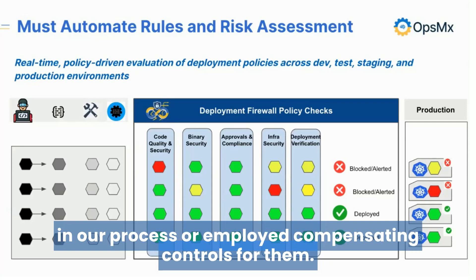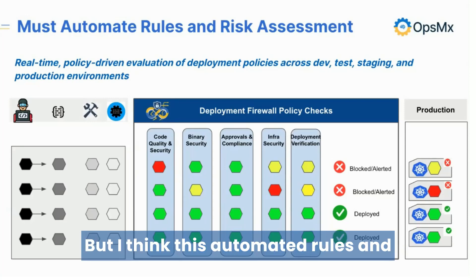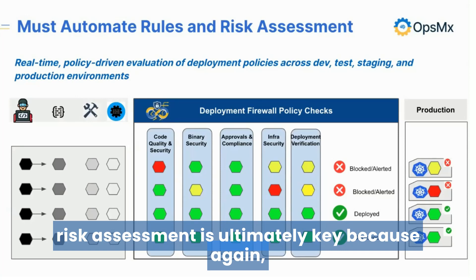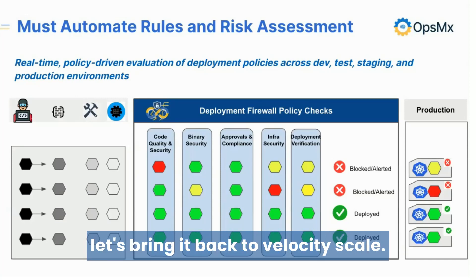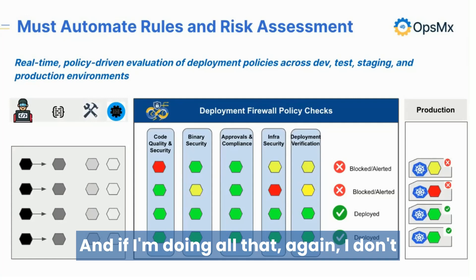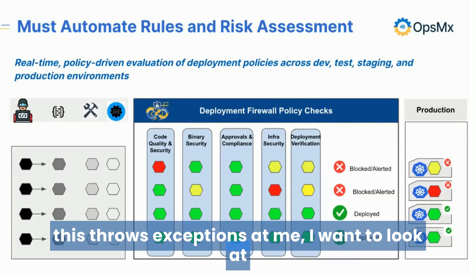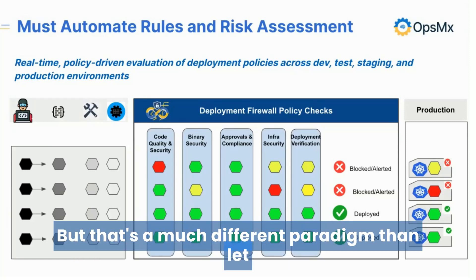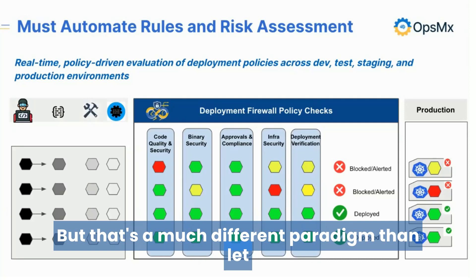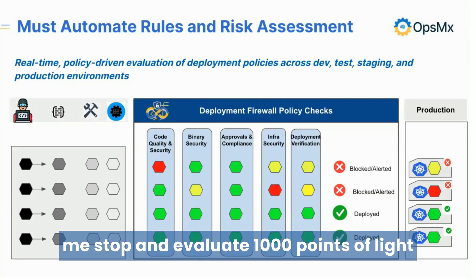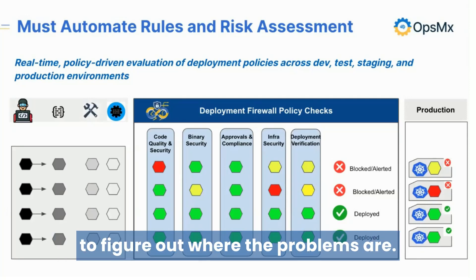Or employed compensating controls for them. This automated rules and risk assessment is ultimately key because, bringing it back to velocity and scale, I don't have time to stop and analyze this manually. What I do have time for is if this throws exceptions at me, I want to look at them and decide what to do. That's a very different paradigm than stopping to evaluate a thousand points of light to figure out where the problems are.